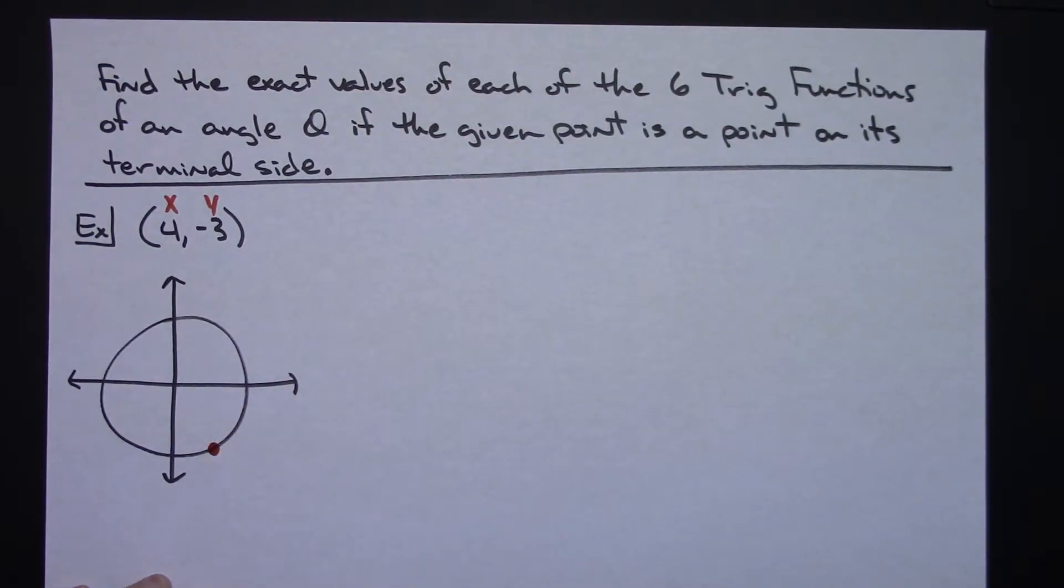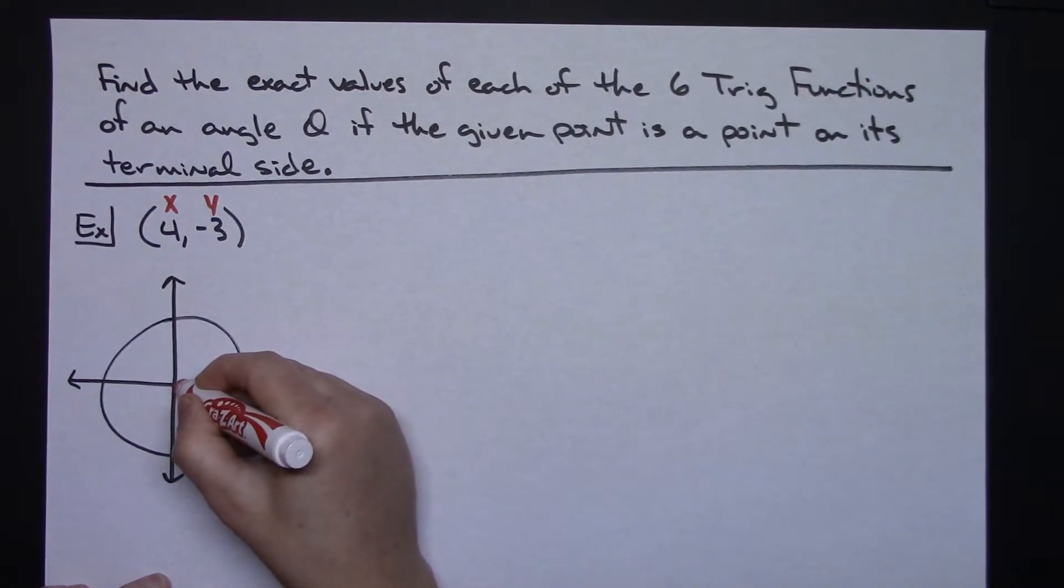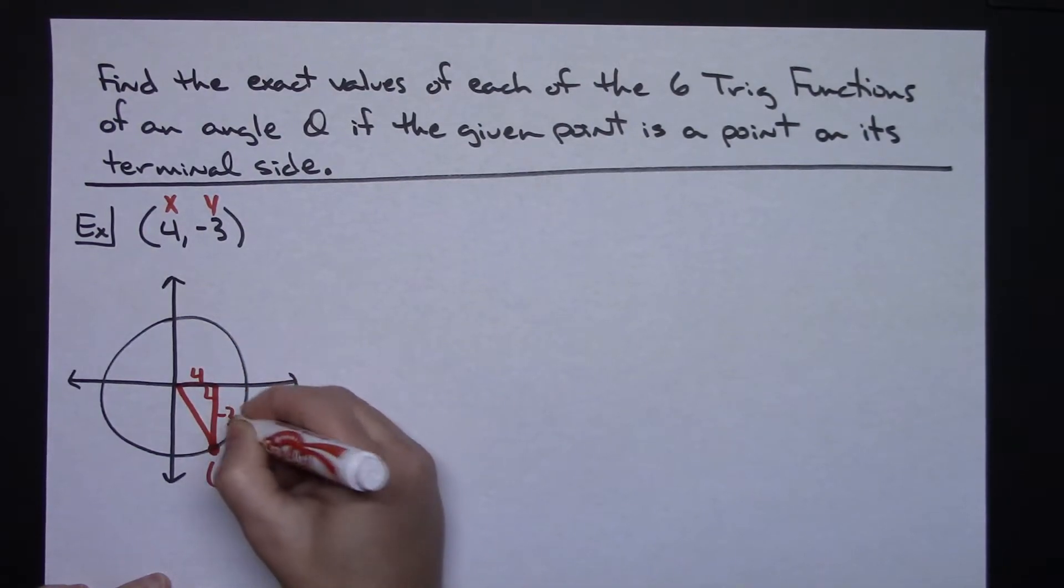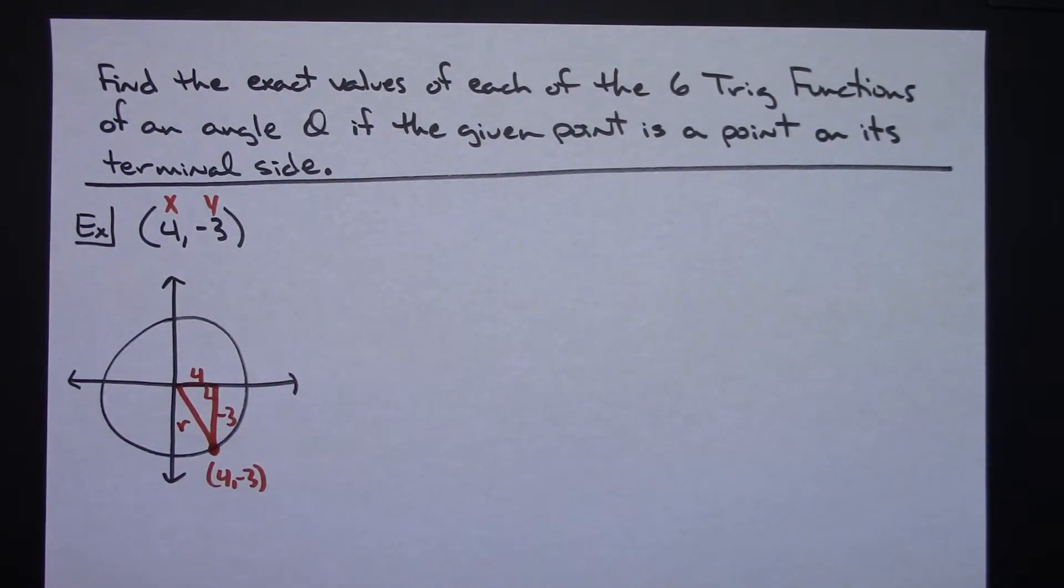So it would have to be in this quadrant right here. So this would be (4, negative 3). So it's in my fourth quadrant. So my right triangle there that's being drawn is right there. This distance going across here is 4. This distance is negative 3. And so then I would need to find my radius r.